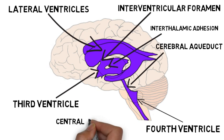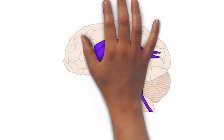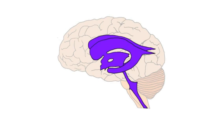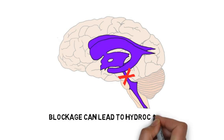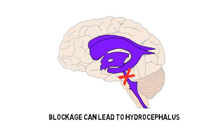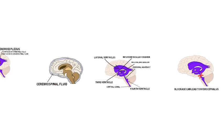The fourth ventricle extends to and is continuous with the central canal, a CSF-filled cavity that runs the length of the spinal cord. If CSF circulation is blocked, as by a tumor, or is otherwise abnormally excessive, it can result in increased pressure and expansion of the ventricles. This creates a condition known as hydrocephalus, which can cause a variety of complications and be life-threatening.